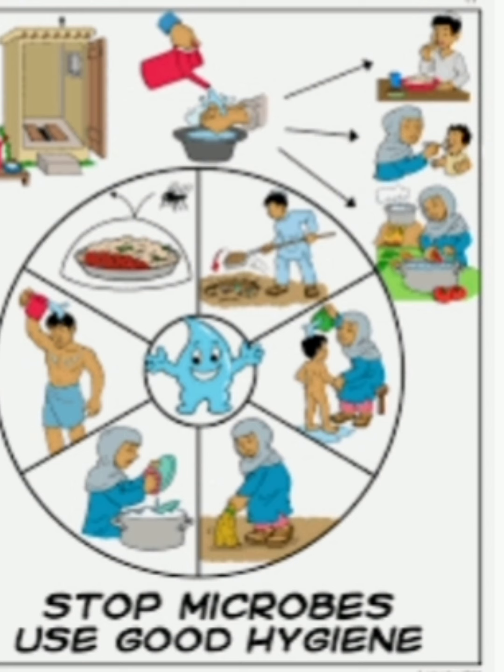To summarize, we can prevent communicable diseases by maintaining good hygiene: brushing teeth twice a day, taking a bath daily, cutting nails regularly, wearing clean clothes, and washing hands before and after meals. We should cover our nose and mouth while coughing and sneezing. For our neighborhood, we should clean the floor regularly using disinfectant, always throw garbage in a dustbin, and prevent water from becoming stagnant. These are the ways to prevent communicable diseases from spreading.